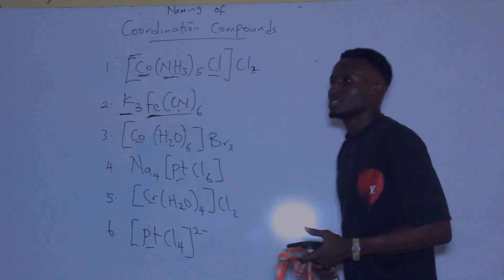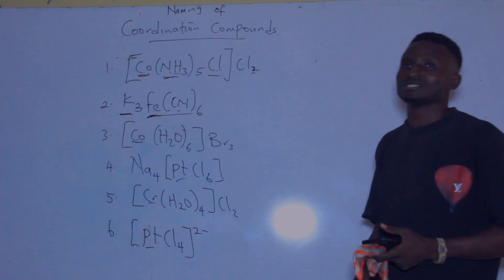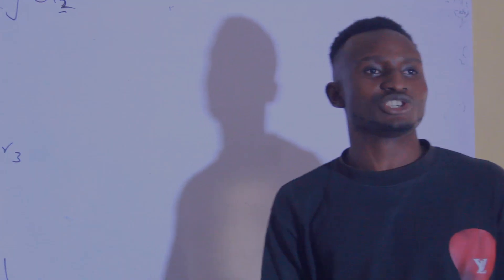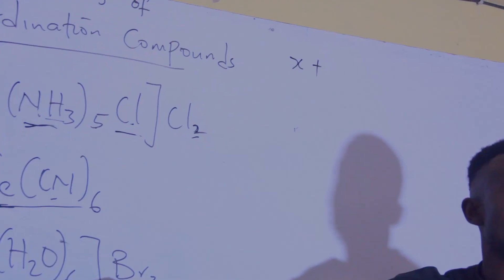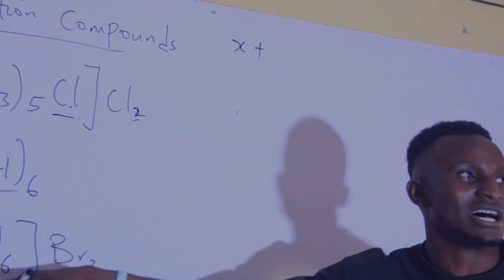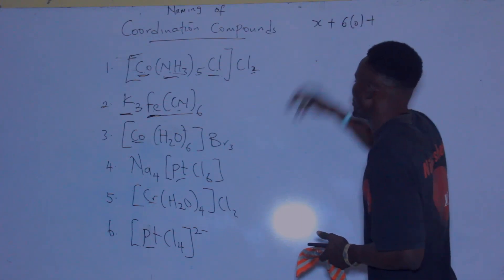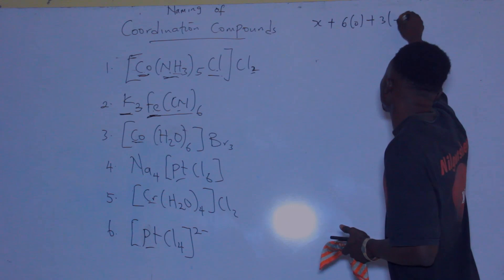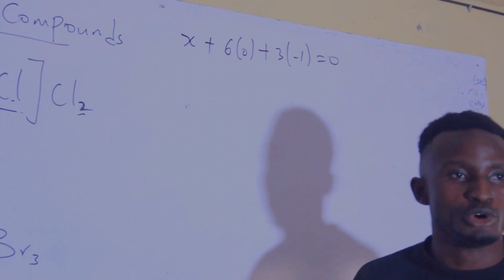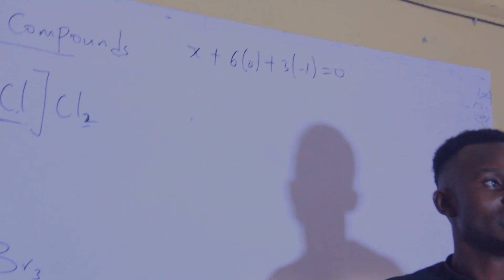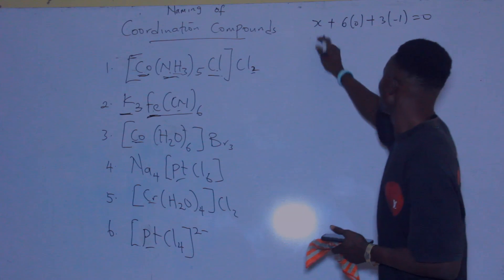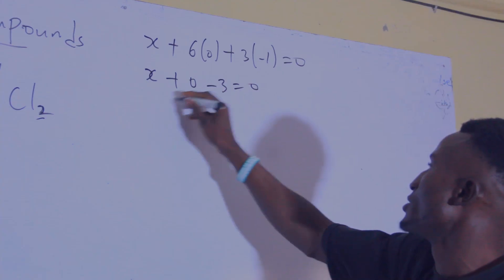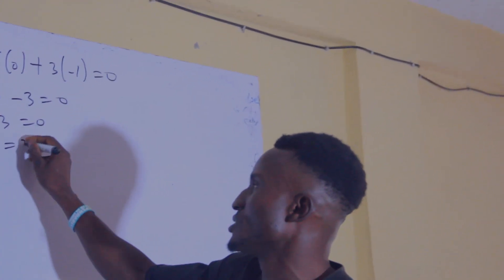For the third compound, the central atom is cobalt. Finding its oxidation state: X + 6(0) for water (neutral) + 3(−1) for bromine = 0. So X + 0 − 3 = 0, giving X − 3 = 0, therefore X = 3. The oxidation state of cobalt is three.